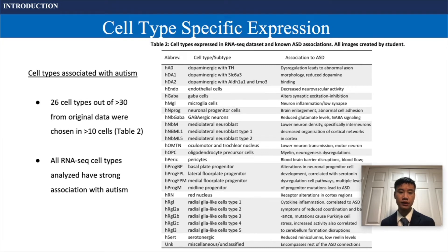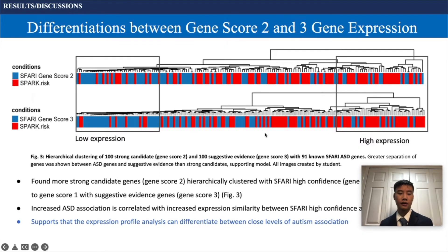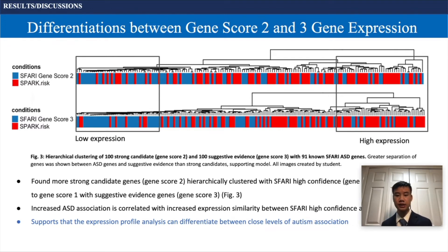26 cell types out of over 30 from the original data were chosen, expressed in greater than 10 cells, and all RNA-seq cell types analyzed had strong association with autism. For example, dopaminergic cells have been correlated with abnormal axon morphology and reduced dopamine binding. For the first test, there were clear differentiations between gene score 2 and gene score 3 expression. More strong candidate genes with gene score 2 were hierarchically clustered with the SFARI high-confidence genes compared to suggestive evidence genes at gene score 3, supporting that expression profile analysis can differentiate between close levels of autism association.